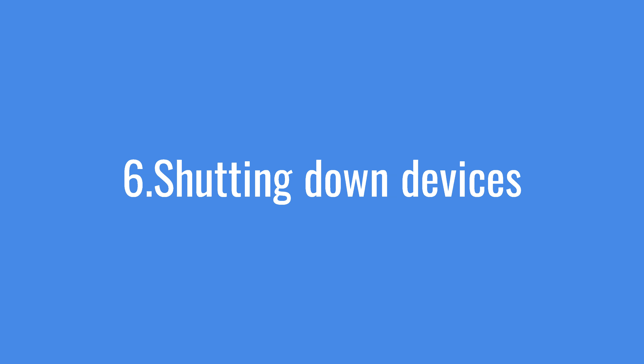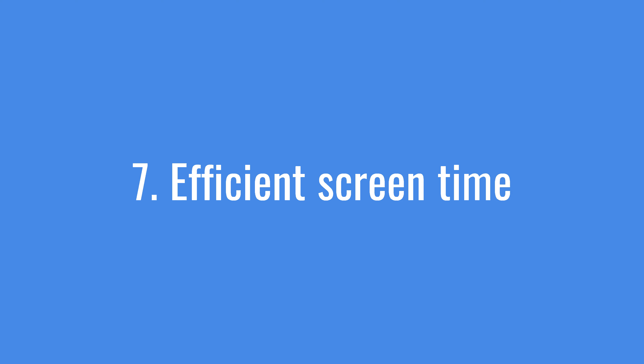Number six: shutting down devices at the end of the working day. I know it is difficult in some organizations because there are no clear limits on technology use and employees often feel pressurized to stay connected — this can lead to techno-stress, and it is documented in research. Number seven: efficient screen time. Sometimes it's not efficient to multitask; media multitasking is not that efficient. So concentrate on one task at a time and finish it off.